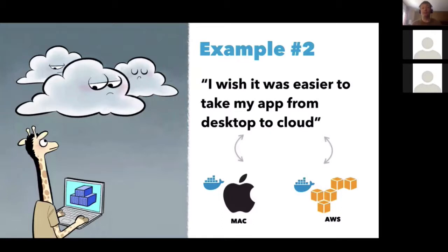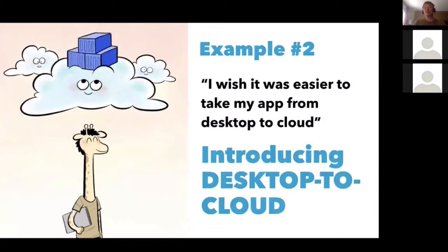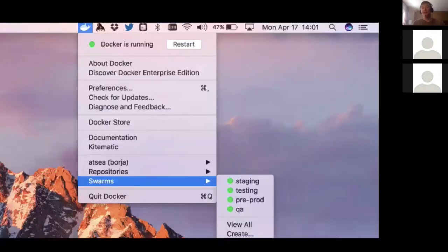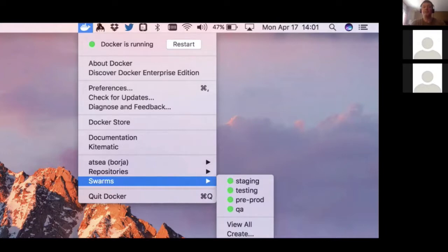The second example: you're a developer creating your application and you wish it was easier to take that app from your desktop to the cloud, either for testing, for collaborating with other people, for staging, or sometimes for production. For that, we introduced a new feature called desktop to cloud. In Docker desktop editions — Mac and Windows — you have a menu with a whale, and there are some new menu items including sign-in, where you can sign in with your Docker ID into Docker Cloud.